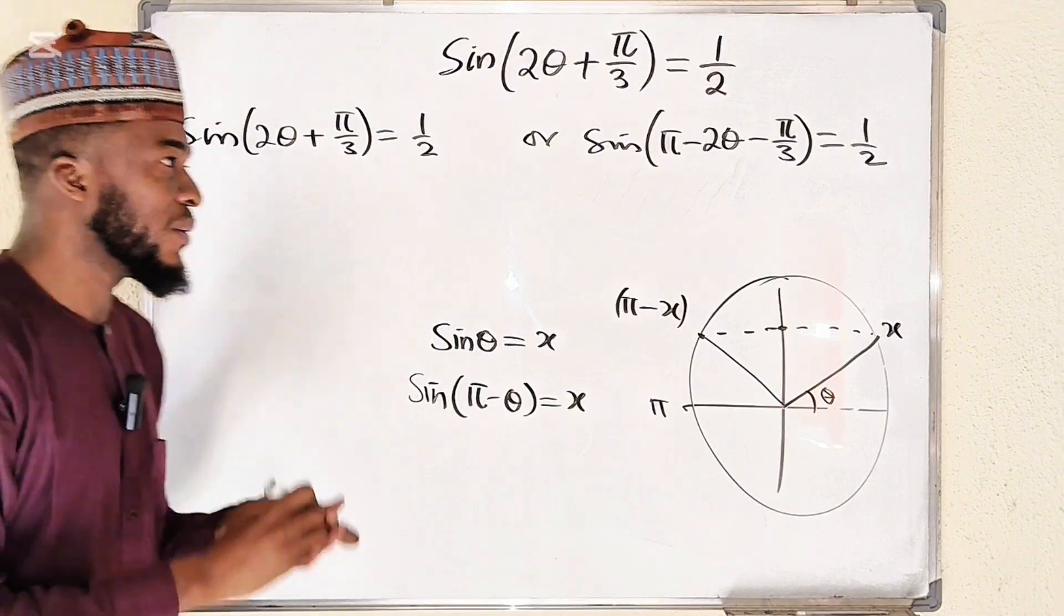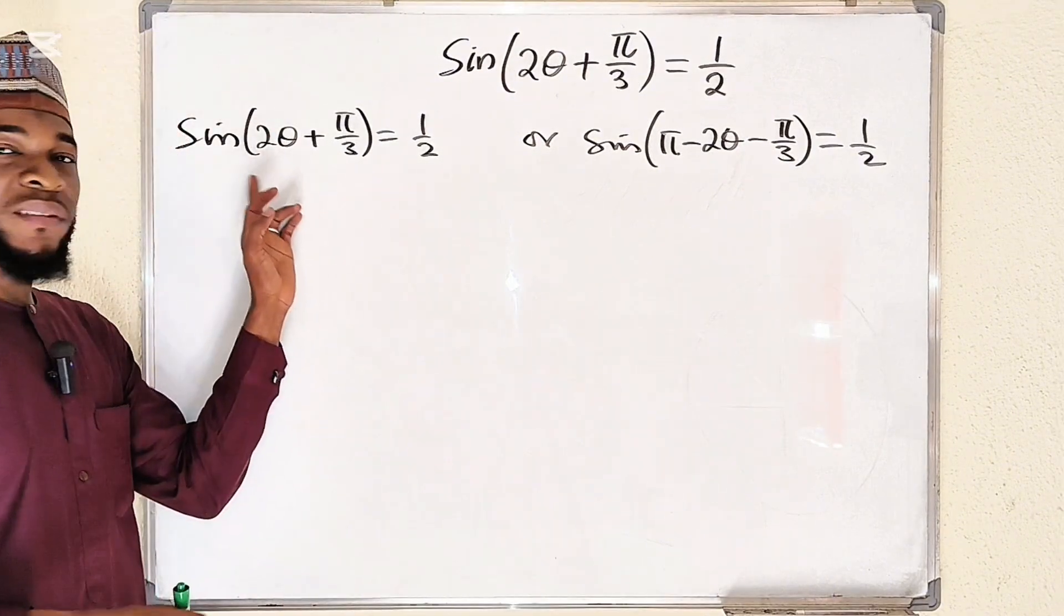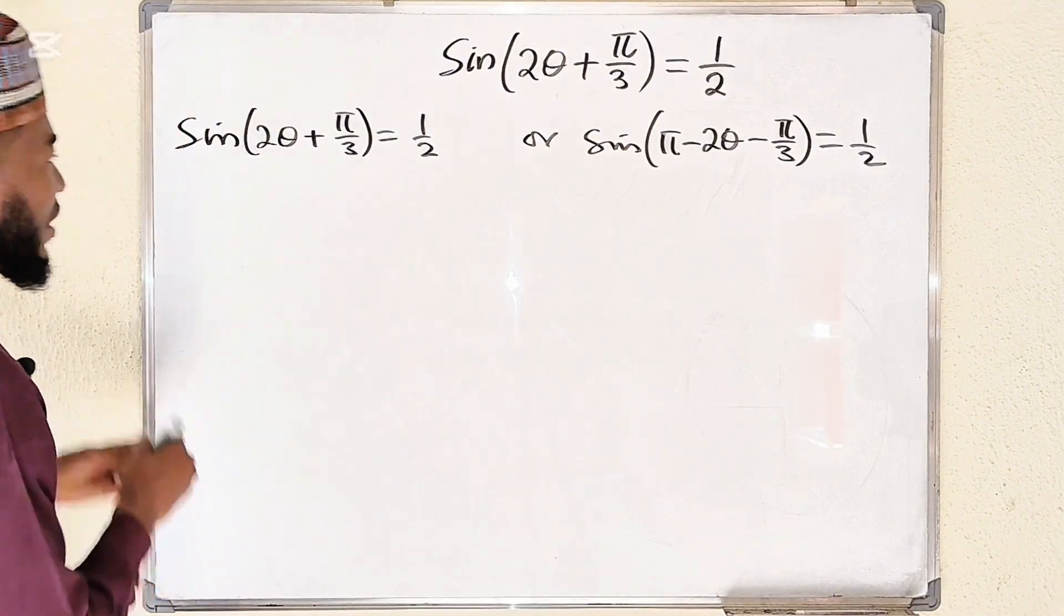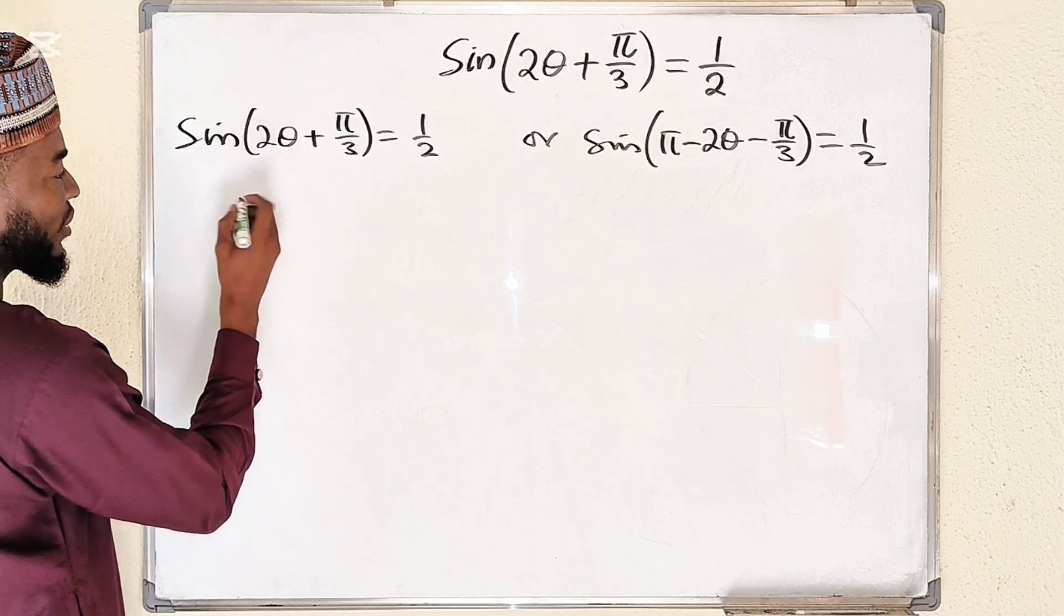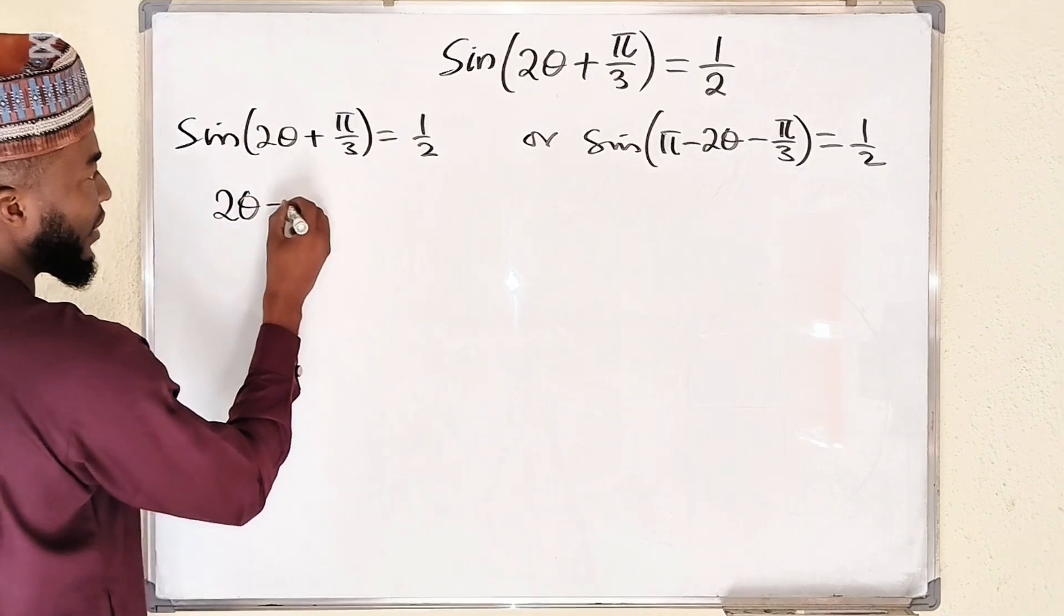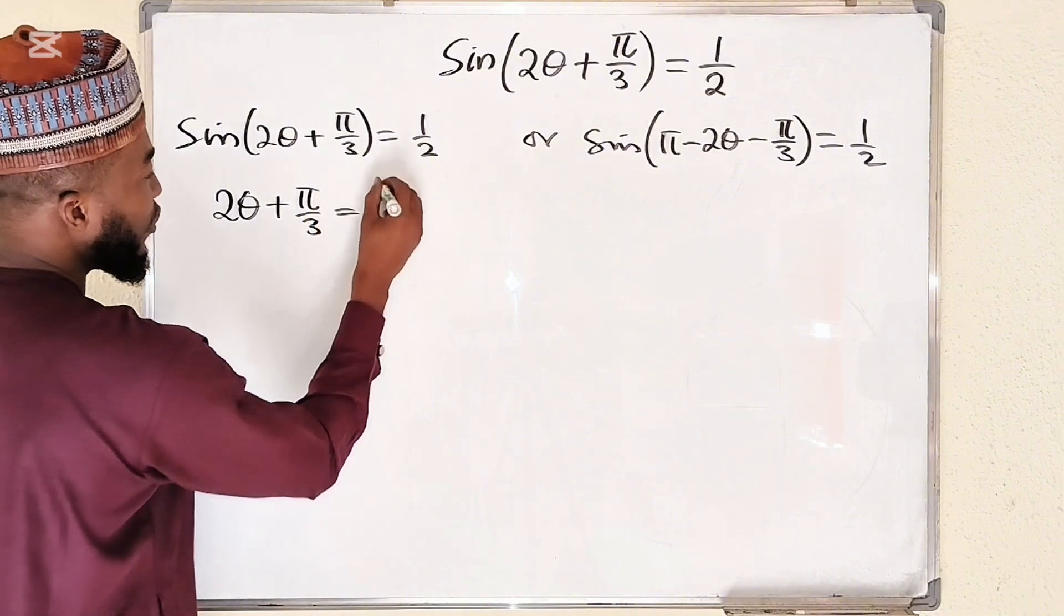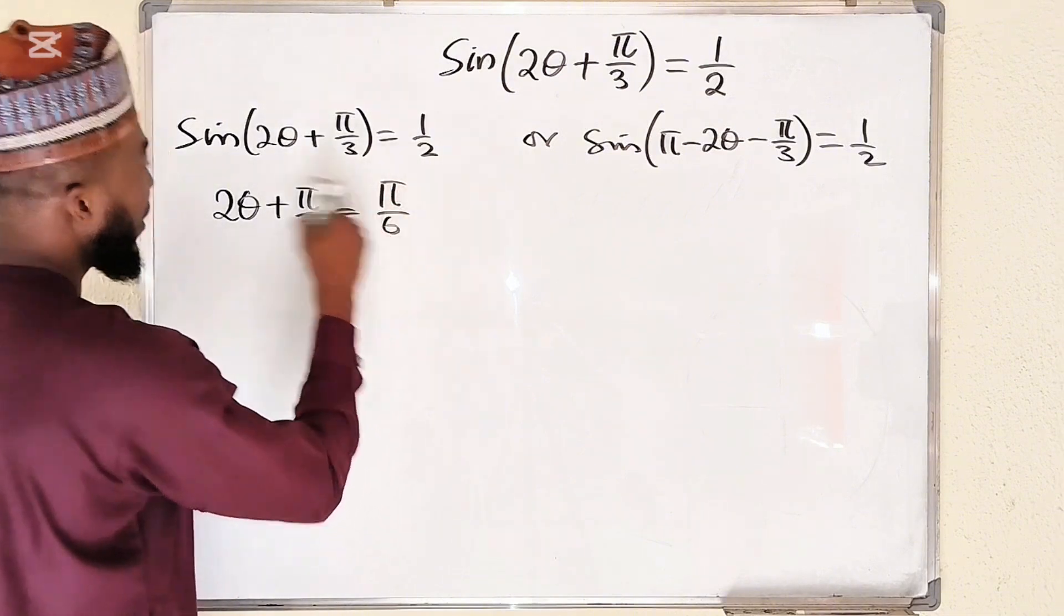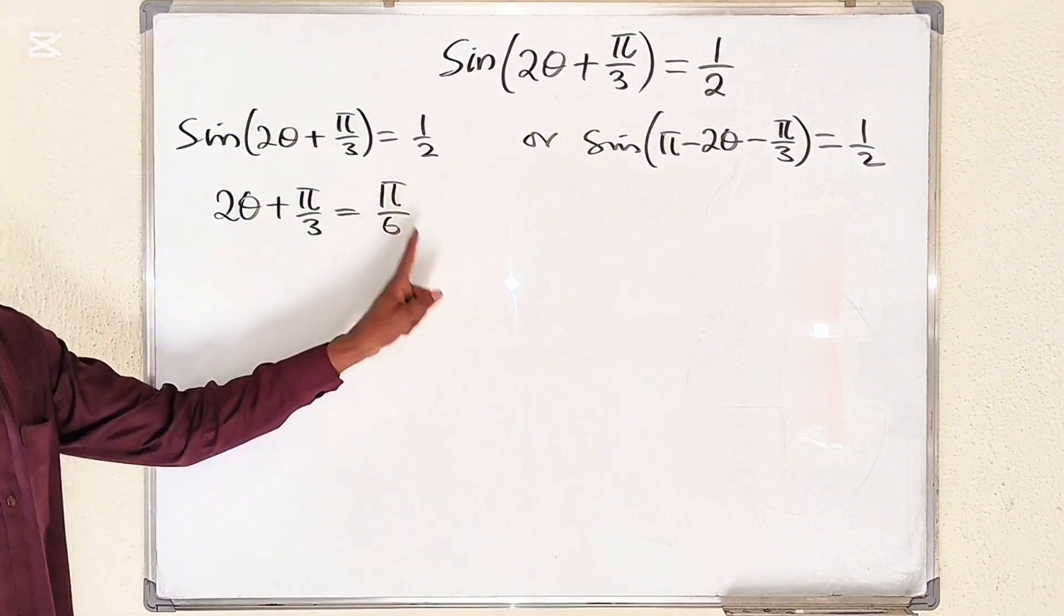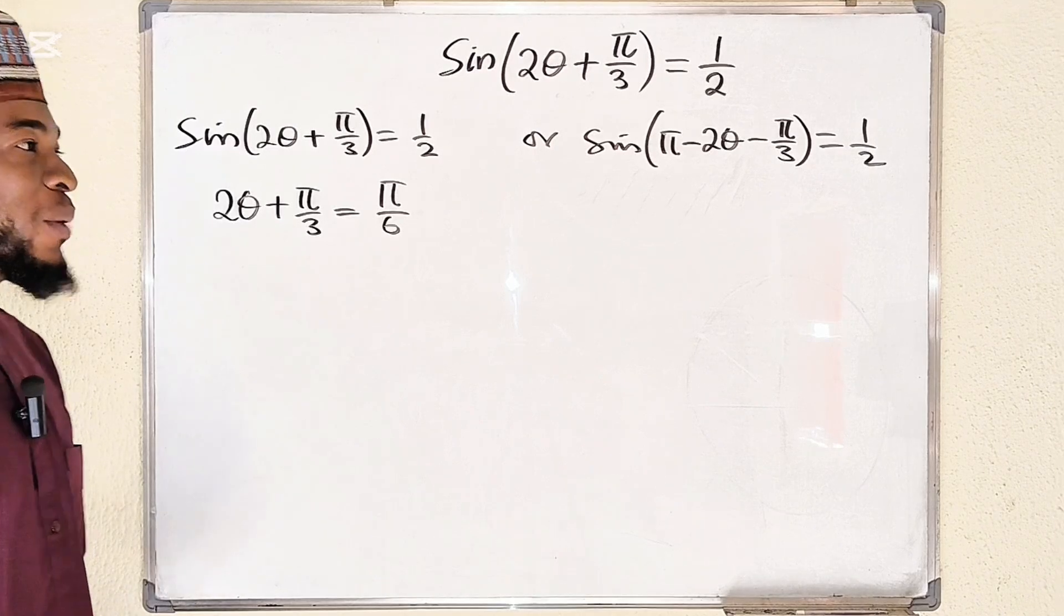If you take sine inverse of both sides, it implies that, let me start with this equation: 2 theta plus pi divided by 3 is equal to pi over 6, because sine inverse of 1 over 2 is pi divided by 6.